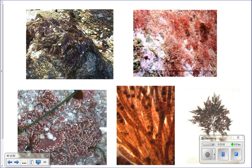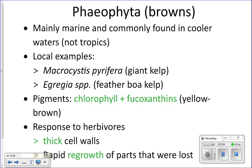Phaeophyta, or brown algae, are mostly marine species found in the ocean, mostly kelps. They are large algae found in cooler waters — temperate and subpolar regions — and are not really found in the tropics. Two types found off our coast are macrocystis (giant kelp) and feather boa kelp.